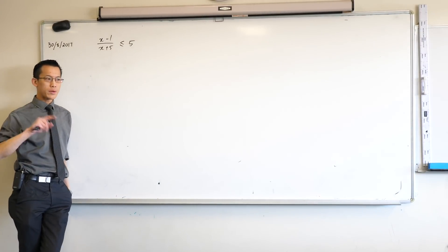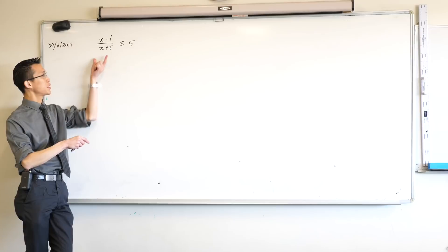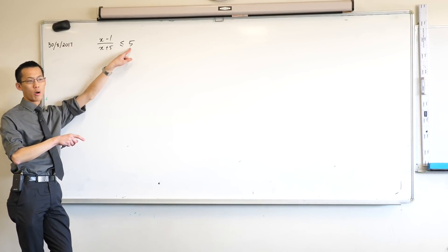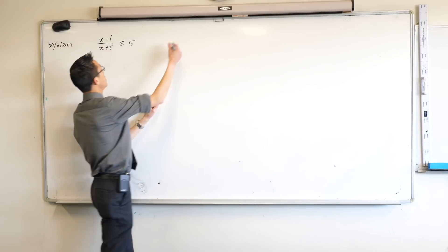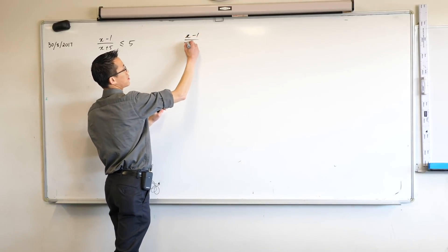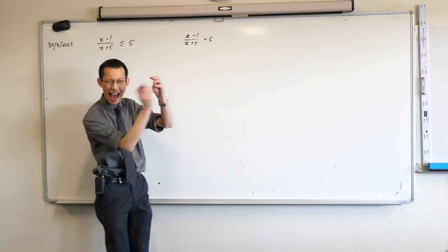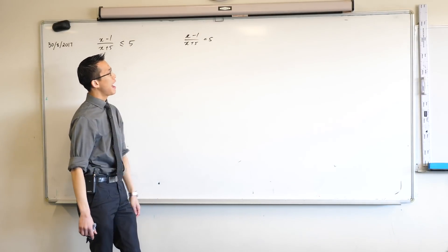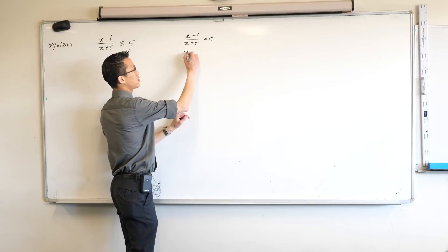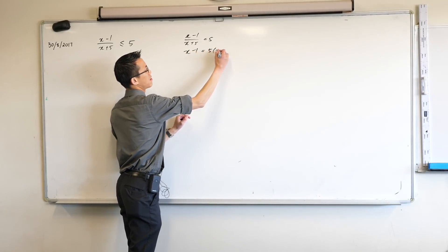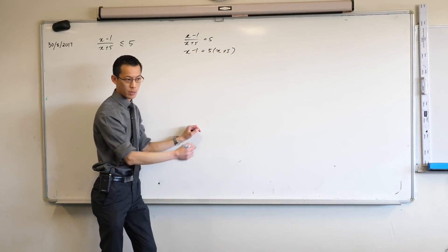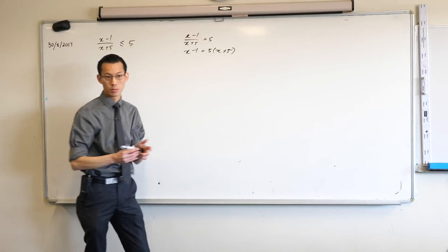Do you remember when we were finding the point of intersection between this graph and this horizontal line? I just did this. I said that x minus 1 on x plus 5 equals 5. I said let's find when they're actually equal to each other, and because it was an equation I could just do this. You can just multiply by x plus 5 on both sides and everything just works.